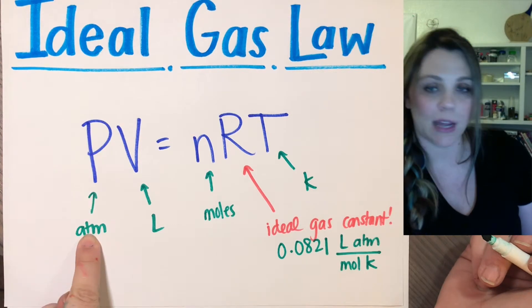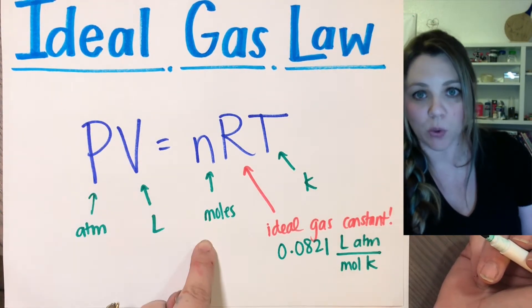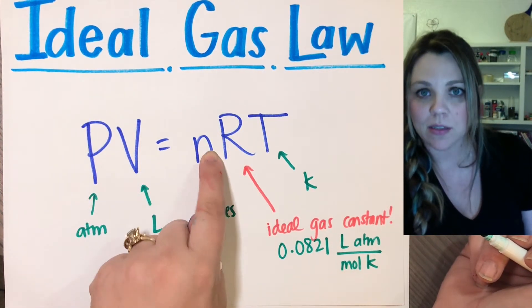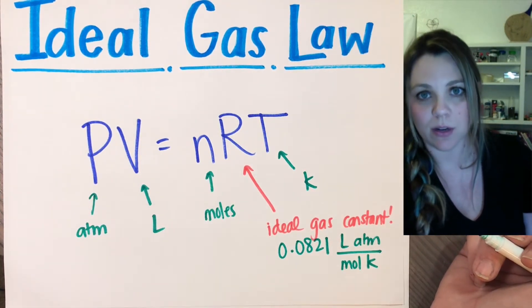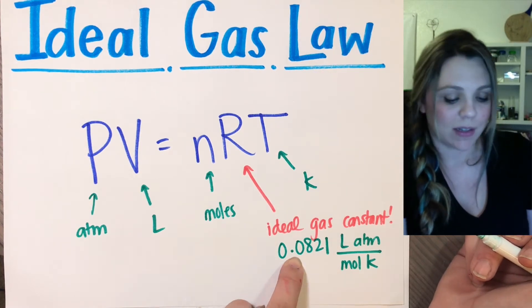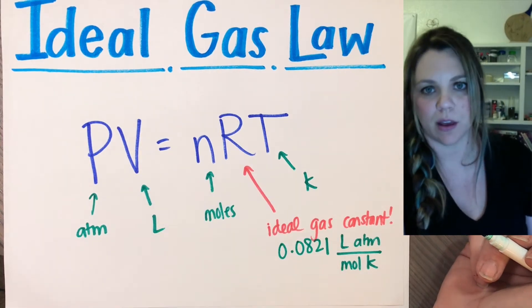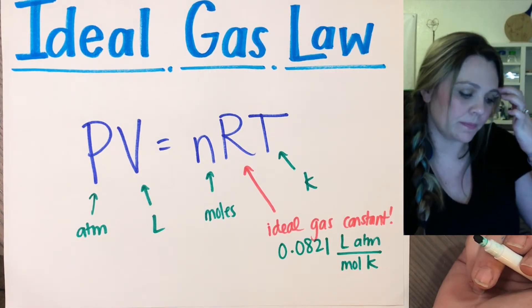So pressure is in atmosphere, volume is in liter, number of moles is in moles, R is your gas constant on the back of your periodic table that you don't have to memorize, 0.0821 liters of atmosphere divided by moles Kelvin, temperatures in Kelvin.